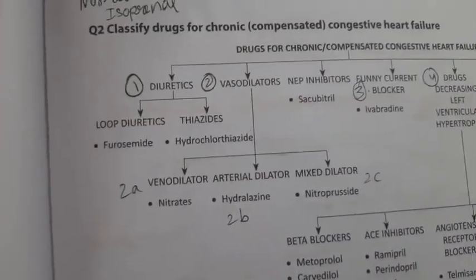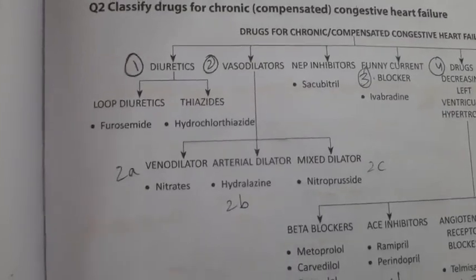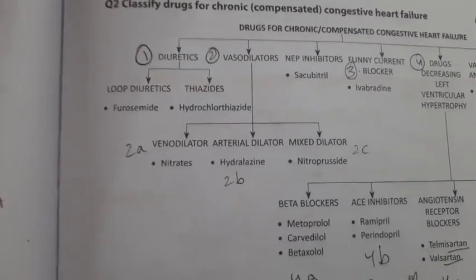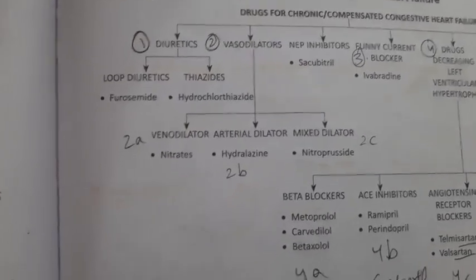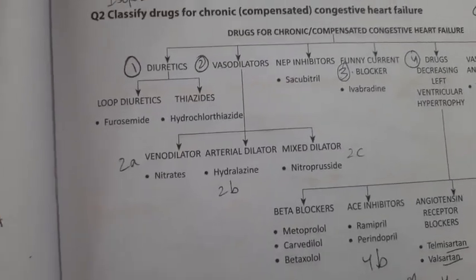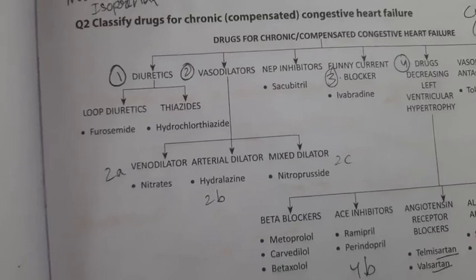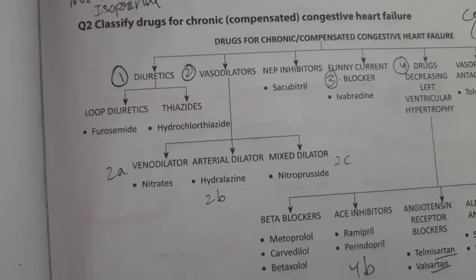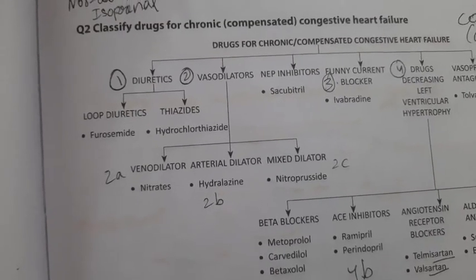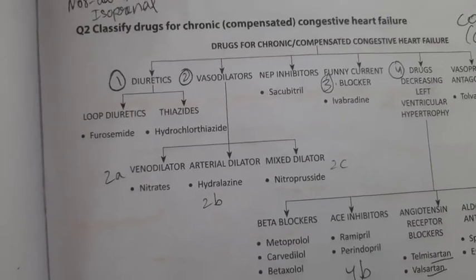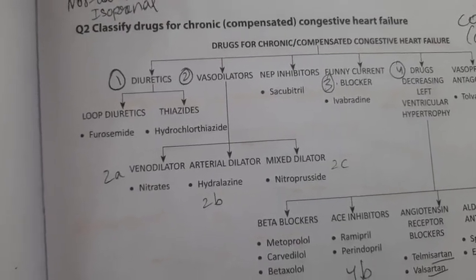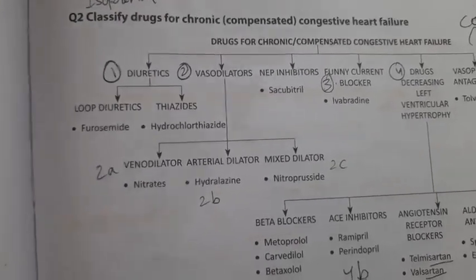Firstly, we'll talk about diuretics. There are two types of diuretics: loop diuretics and thiazides. Loop diuretics — for example, furosemide. Thiazides — for example, hydrochlorothiazide.